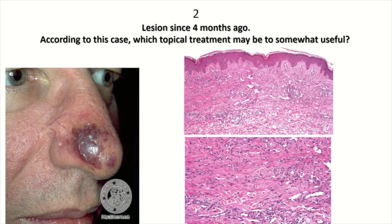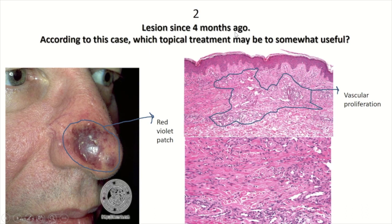Question two: lesions since four months ago. According to this case and this pathology slide, which topical treatments may be useful? As we see here, there is a red-violet patch on the nose since four months ago. On histopathology, vascular proliferation is evident in the papillary dermis, extending into the reticular dermis.